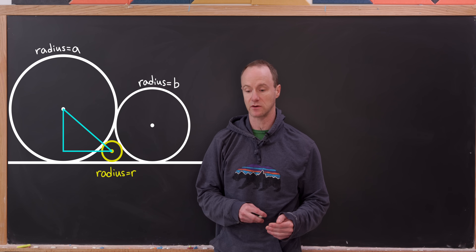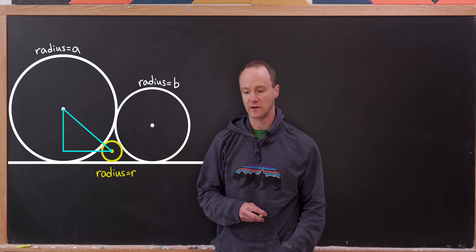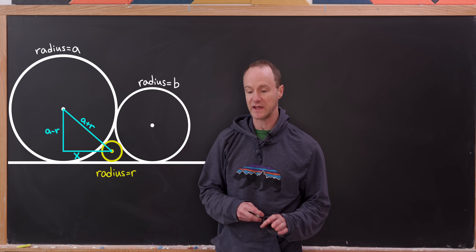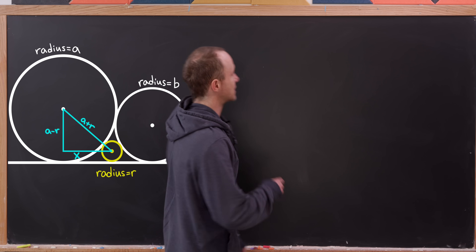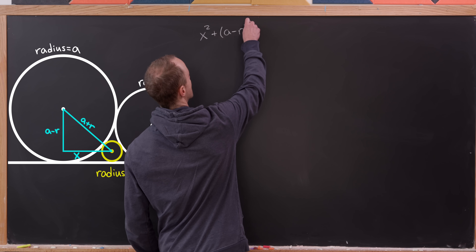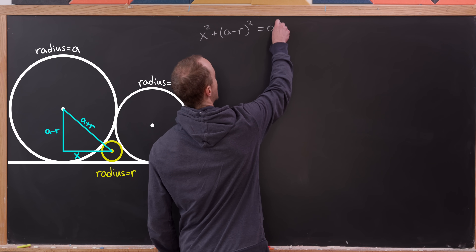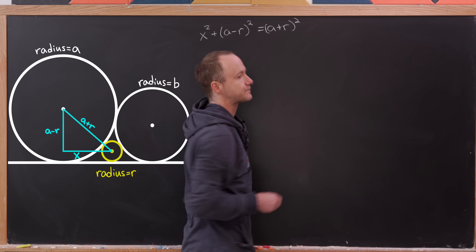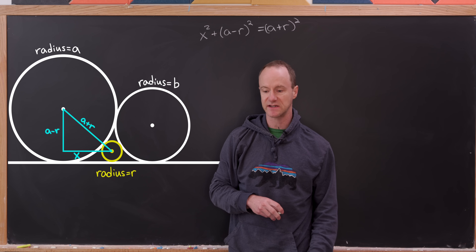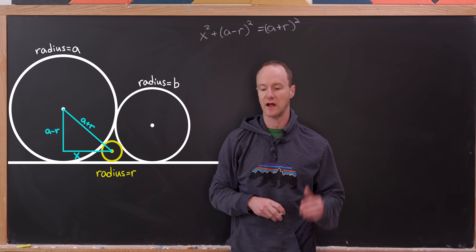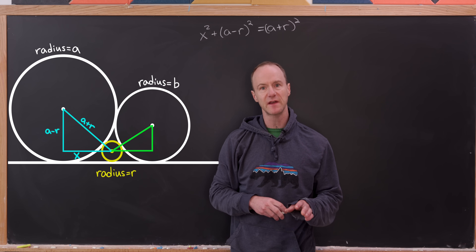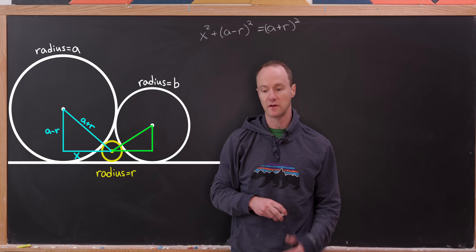We'll say that inscribed circle has radius R. Looking at the triangle formed by the center of the inscribed circle and the center of the circle of radius A, and using the Pythagorean theorem, we get the equation: x² + (A − R)² = (A + R)², where x is the horizontal distance between the center of the inscribed circle and the center of the circle of radius A.